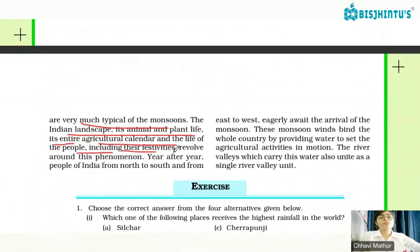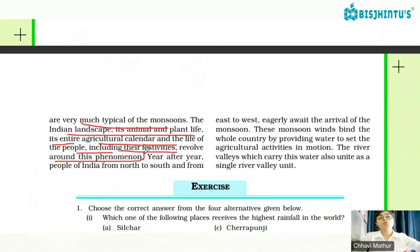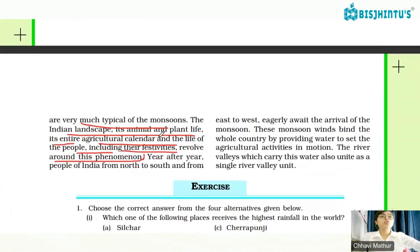All these phenomena — agriculture, animal life, plant life, landscape, tourism activities, economic activities, and festivals — all of these revolve around monsoon. Water is needed for plant life too, and that is why everything depends on the monsoon season.